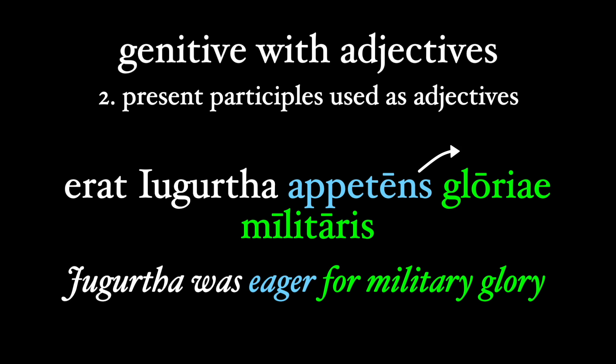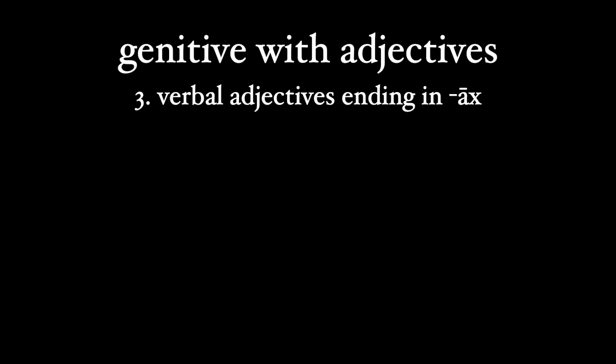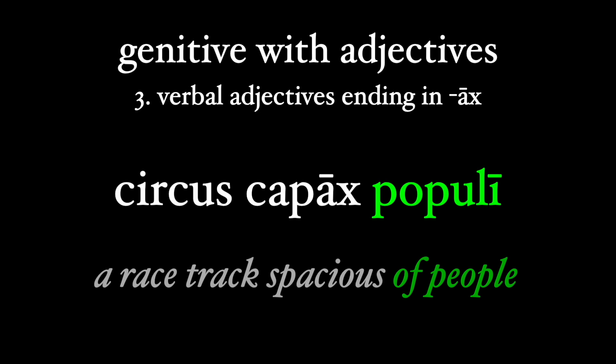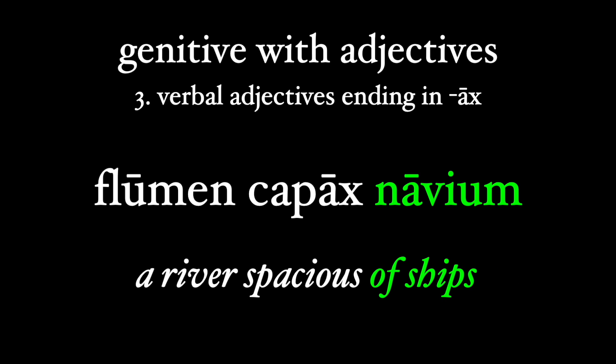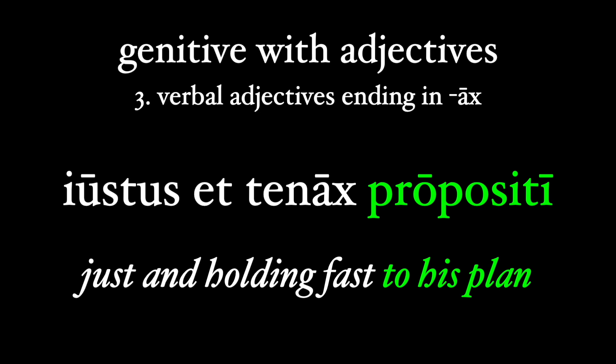Or this sentence from Sallust: 'erat Jugurtha appetens gloriae militaris' — Jugurtha was eager for military glory. 'Appetens' is really just an adjective here, so it takes the genitive case rather than the accusative. The final group are verbal adjectives that end in -ax — this is a feature of later Latin and poetry. Ovid describes a racetrack as 'capax populi,' literally spacious of people, or more idiomatically, big enough to hold the people. Pliny describes a river as 'capax navium,' big enough to hold ships. And Horace describes a man as 'iustus et tenax propositi' — a man just and holding fast to his plan — 'tenax' takes the genitive 'propositi.'